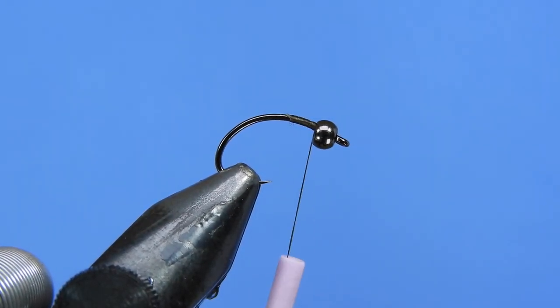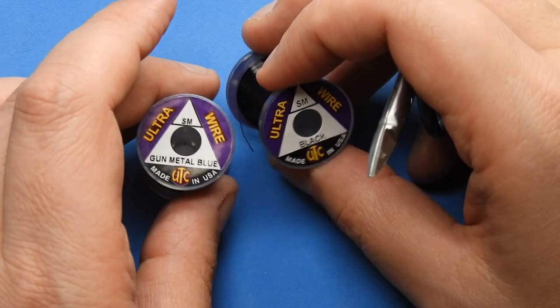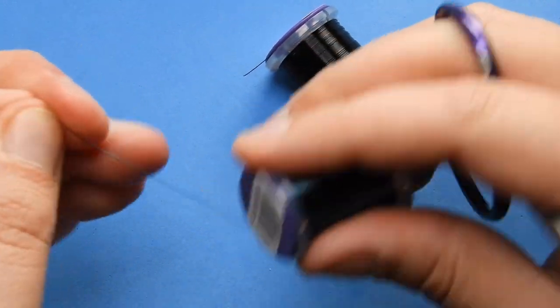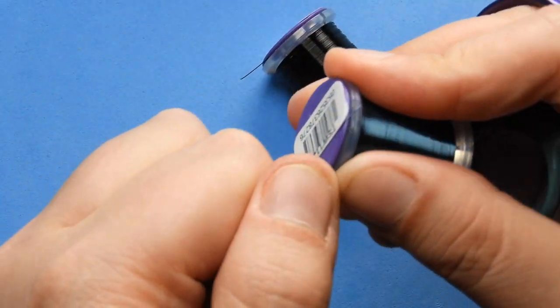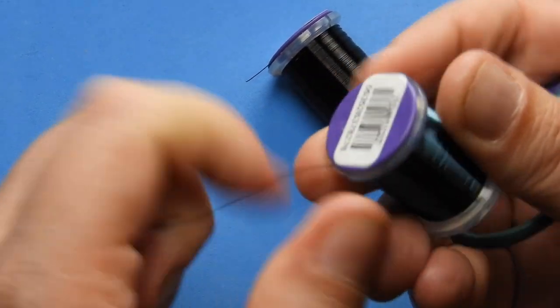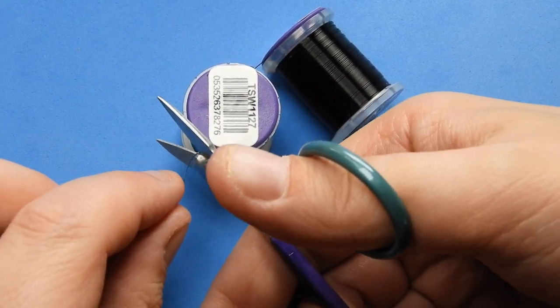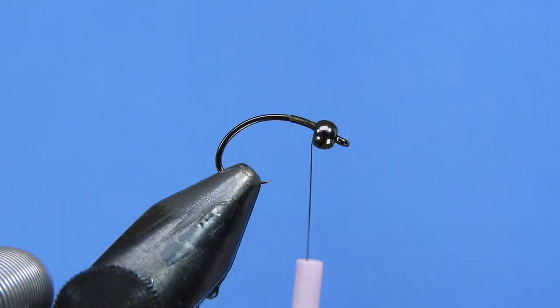So we're going to start off by putting on a piece of wire. For this one I've been using either black or this really cool gunmetal blue from UTC ultra wire and we're using the small size. And we're tying on a size 14 hook, so we'll generally stay to either the small or the extra small.